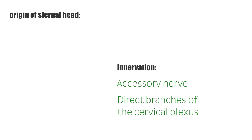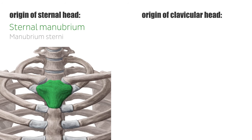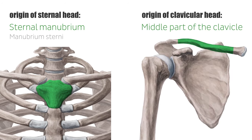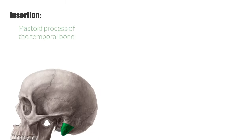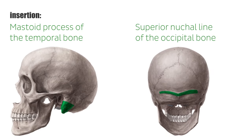The sternal head originates from the sternal manubrium and the clavicular head from the middle part of the clavicle. The insertion is the mastoid process of the temporal bone and the superior nuchal line of the occipital bone.